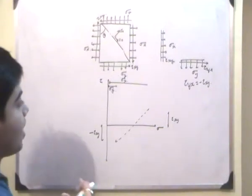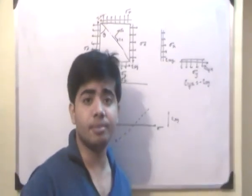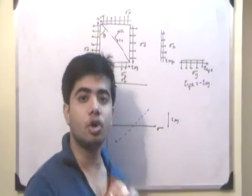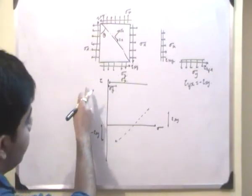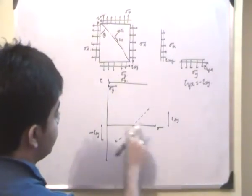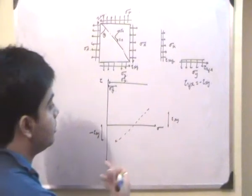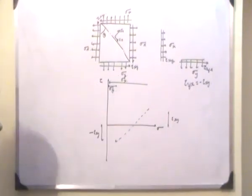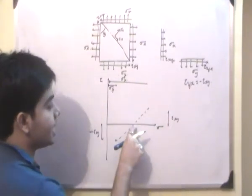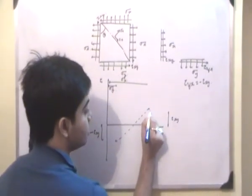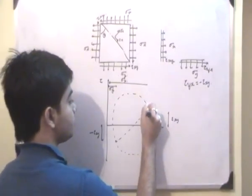Now we need to find the principal planes, which are the planes where there is the maximum and minimum value of normal stress, and in those planes the shear stress is equal to zero. We observe that shear stress can be zero at only specific points on the diagram. There will be two values of theta where shear stress equals zero, and those can be obtained by drawing the Mohr's circle — taking the midpoint of the diameter as the center and the half-length as the radius.